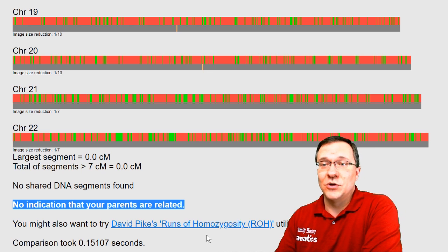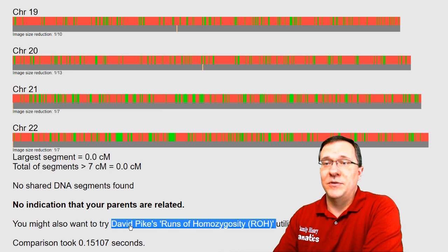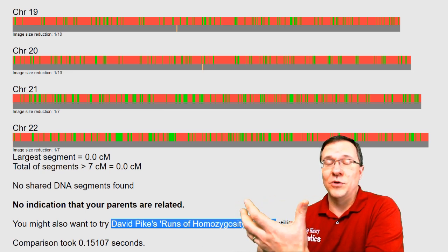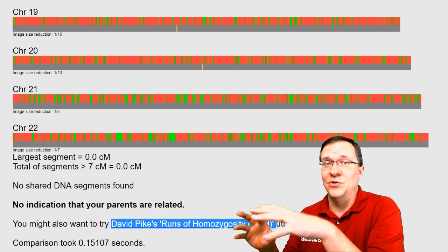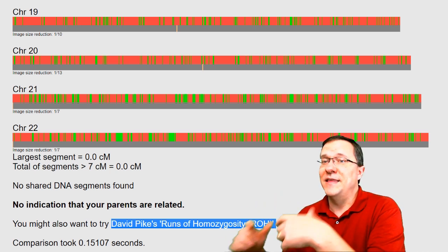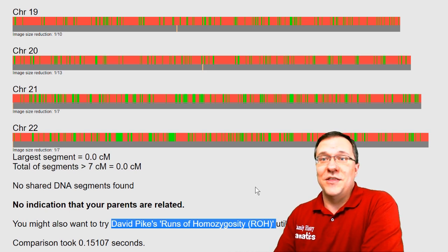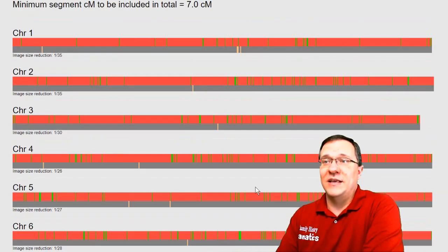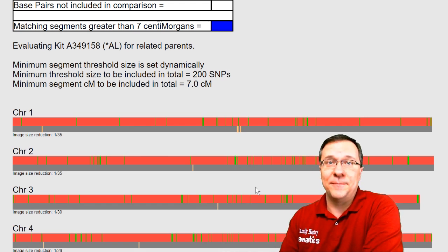If you want to learn more about runs of homozygosity you can go to David Pike's website and read more about it, but it is rather technical. This tool ran really fast and it is something that you can do on every single kit.